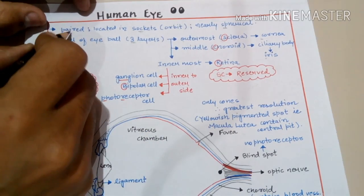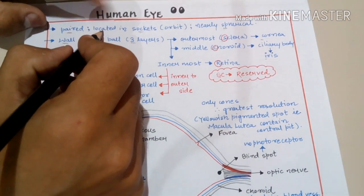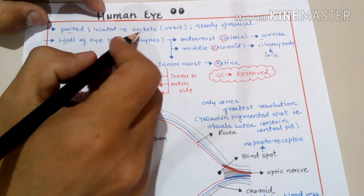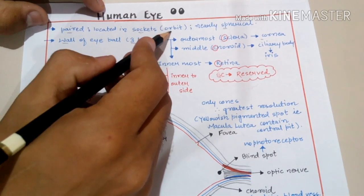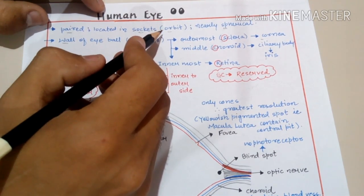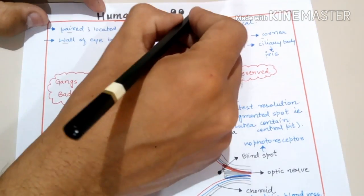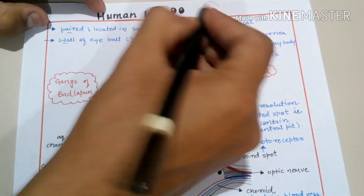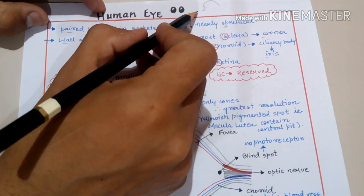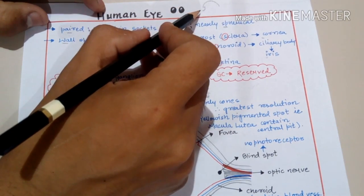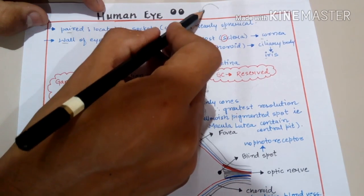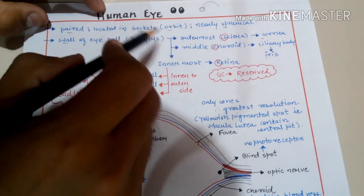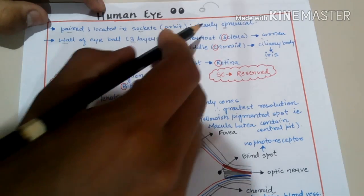We all have two eyes, so the eyes are paired. Their location: they are located in sockets known as eye sockets, which are also known as orbits in the skull. These sockets in the skull are where the eye is located, so these are known as eye sockets or orbits.